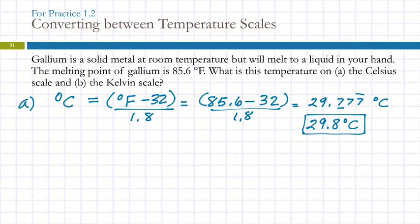You can use sig fig rules on temperatures, but it's actually better to just round to the same decimal place. It's better because the temperature units are very similar — Celsius and Kelvin are exactly the same size, and Fahrenheit is only a little bit smaller than Celsius, so it really doesn't matter that much.